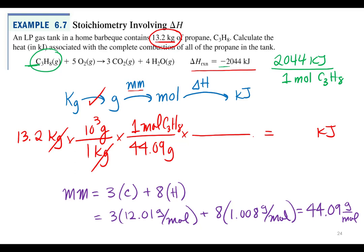Then we can use the enthalpy conversion factor we developed to go from moles to units of energy in kilojoules. The enthalpy says that for every one mole of propane, C₃H₈, we get 2044 kilojoules out of that tank.